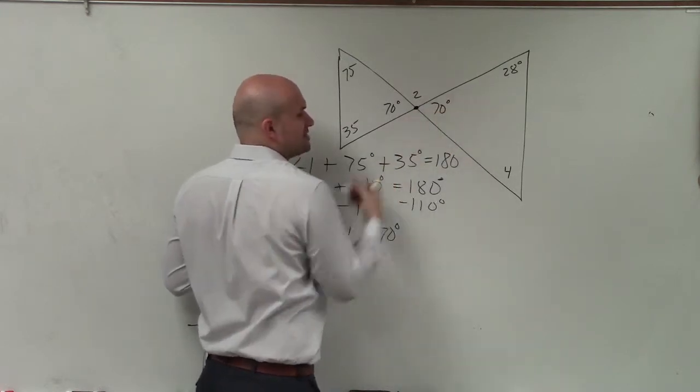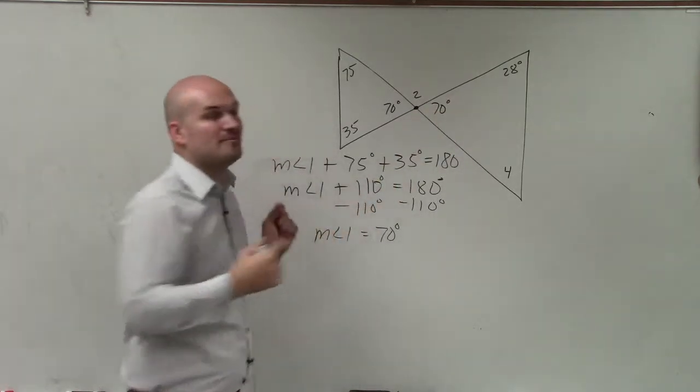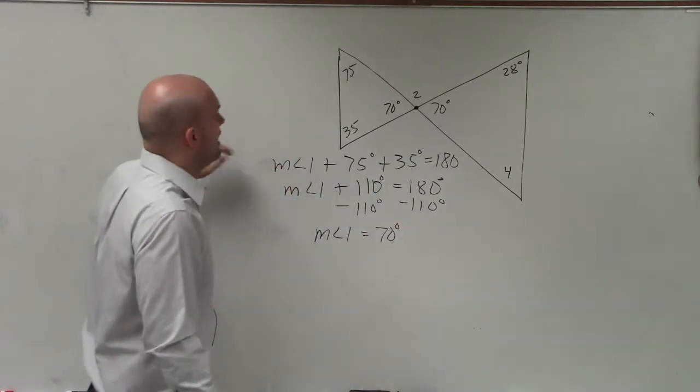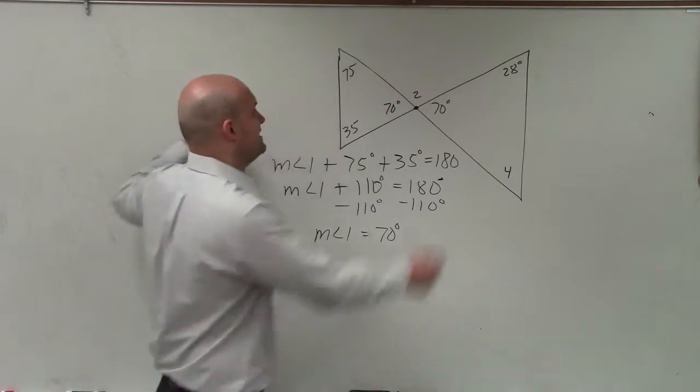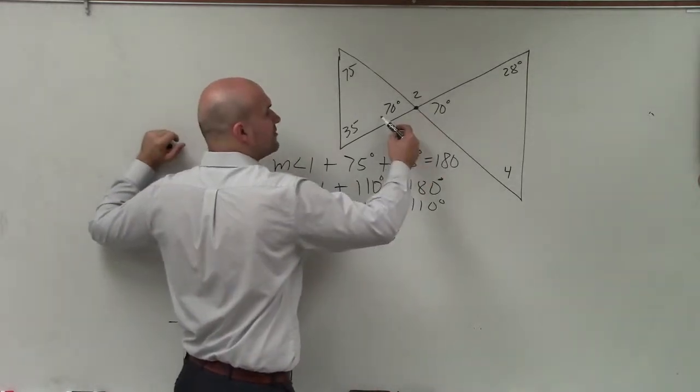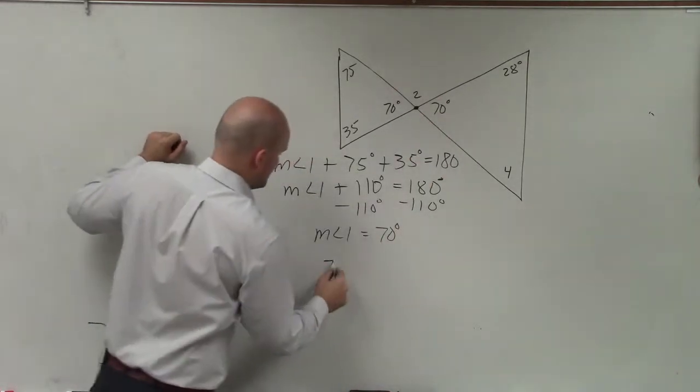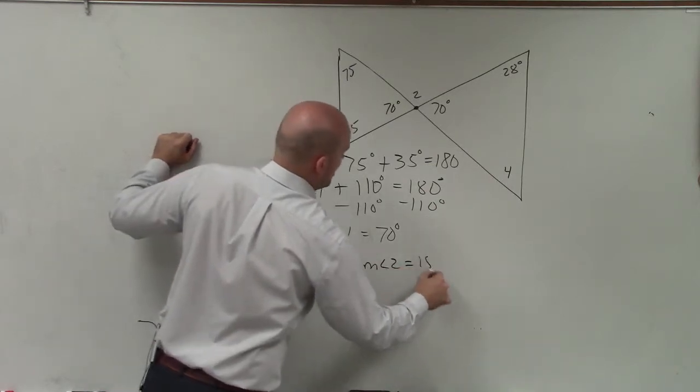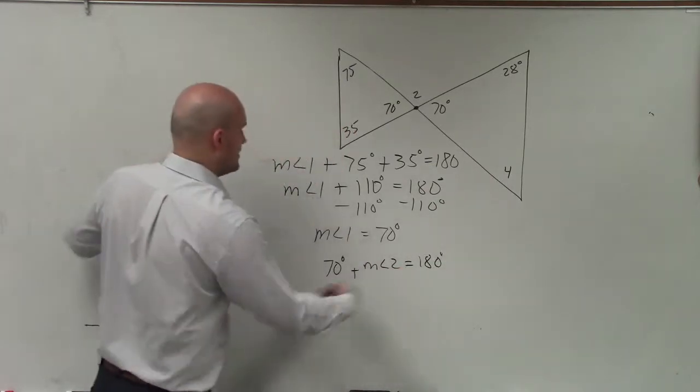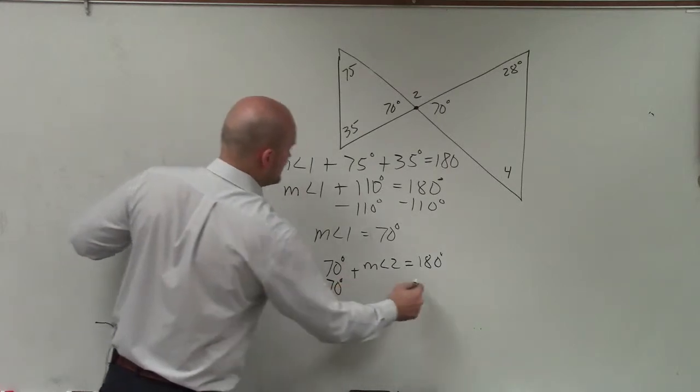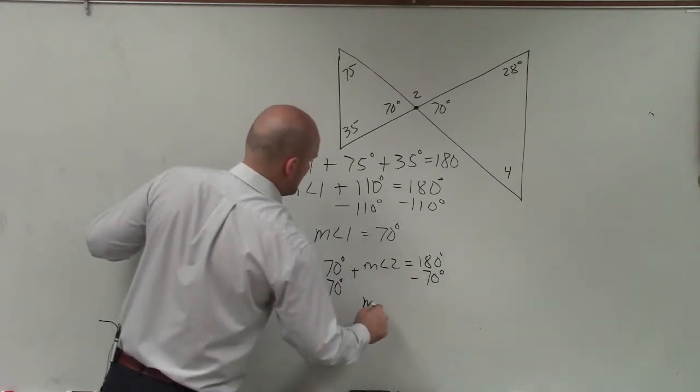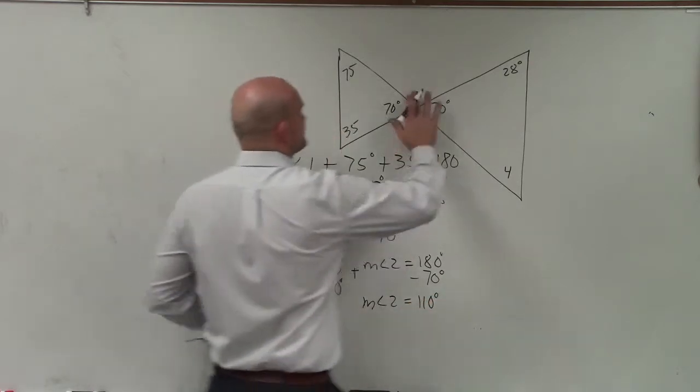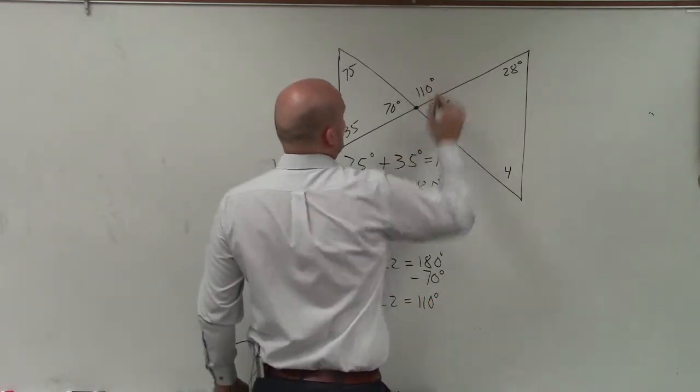So measure of angle 3 is going to be 30 degrees. And then also remember from angle relationships that these create a linear pair, right? So we can say that 70 degrees plus the measure of angle 2 equals 180 degrees. Therefore, solving for angle 2, measure of angle 2 equals 110 degrees.